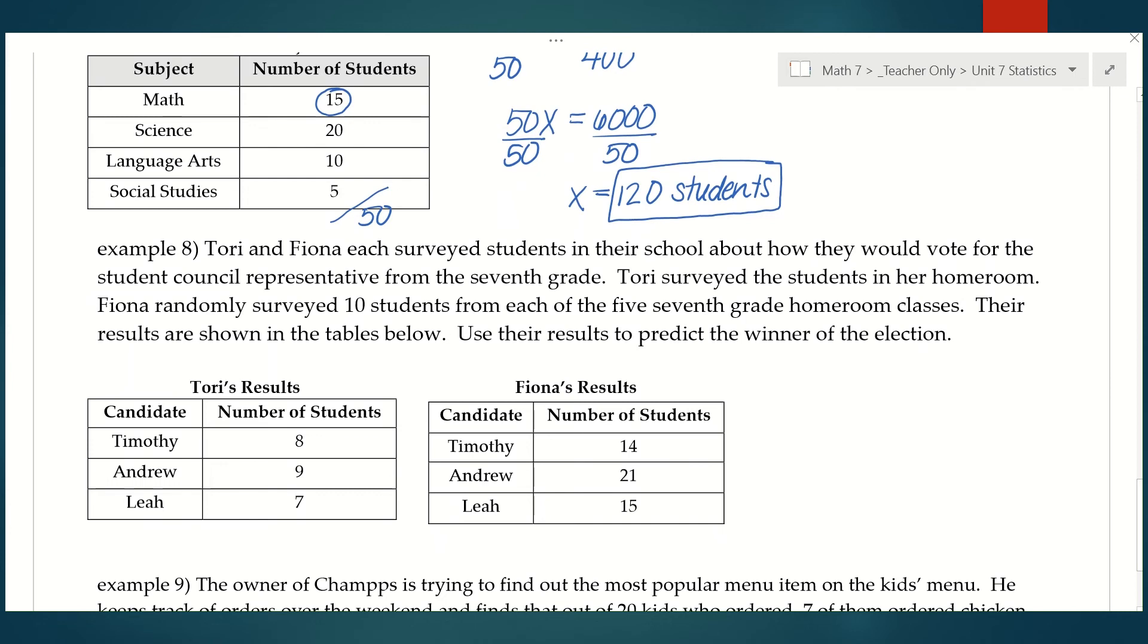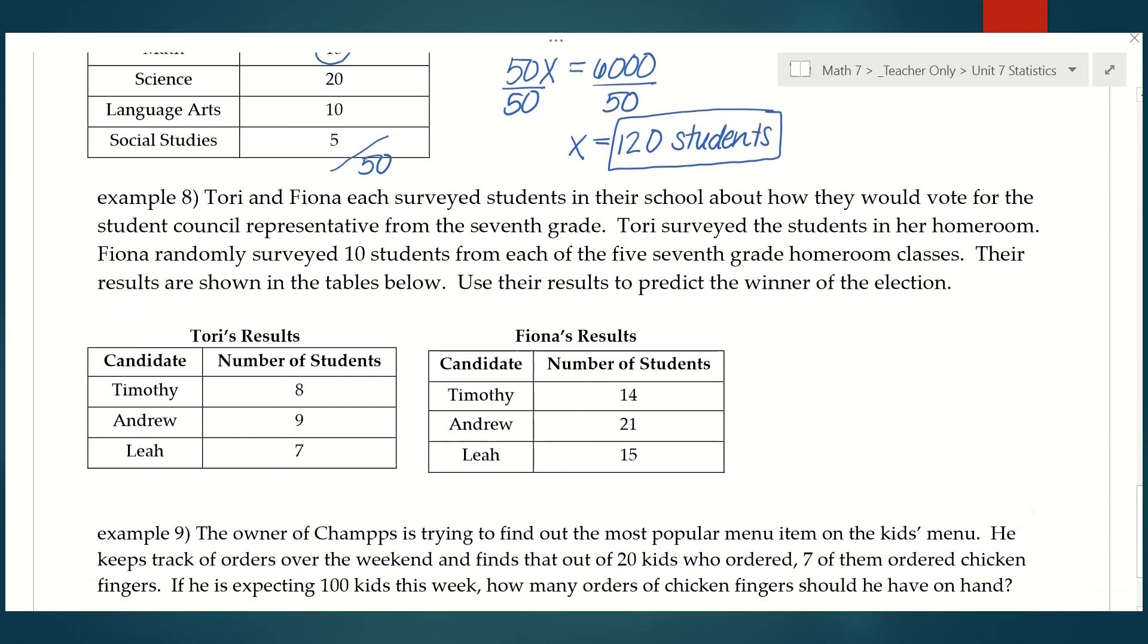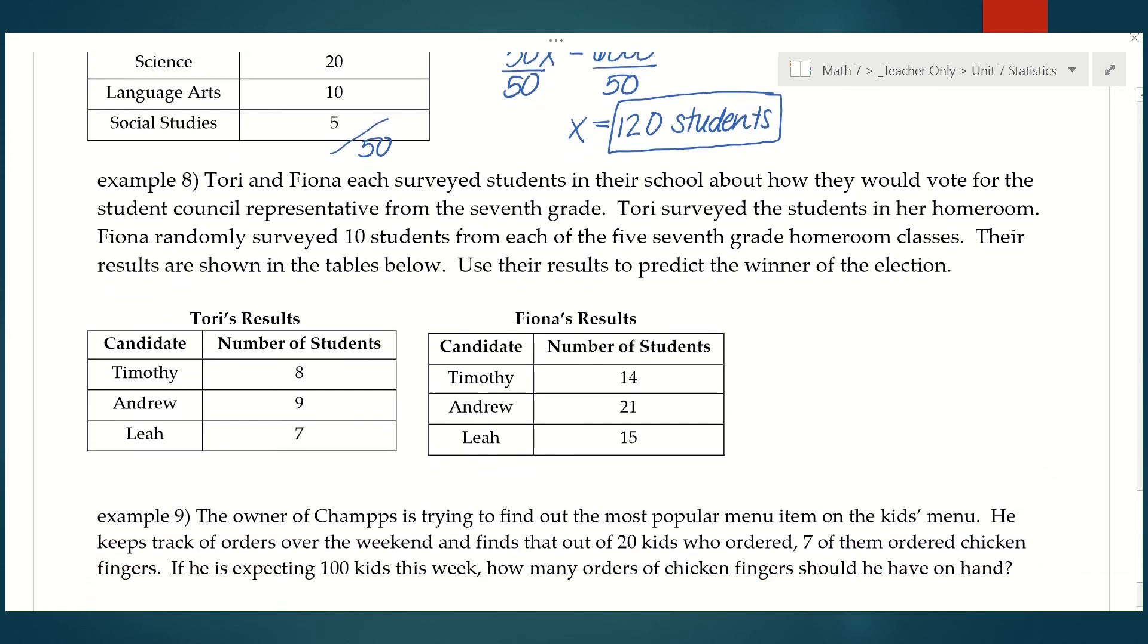Number eight. Tori and Fiona each surveyed students in their school about how they would vote for the student council representative from the seventh grade. Tori surveyed the students in her homeroom. Fiona randomly surveyed 10 students from each of the five seventh grade homeroom classes. Their results are shown in the tables below. Use the results to predict the winner of the election. Based on Tori's results, we can see that the candidate with the highest number of votes was Andrew with nine.